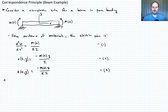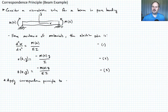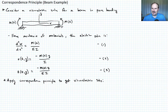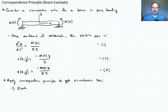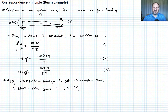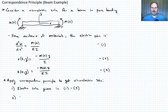Now we want to apply the correspondence principle to get the viscoelastic solution. The correspondence principle lets us find the elastic solution and modify it in Laplace transform space to get the viscoelastic solution. Step one: the elastic solution is given in equations one through three. Step two: take the Laplace transform of the elastic solution.